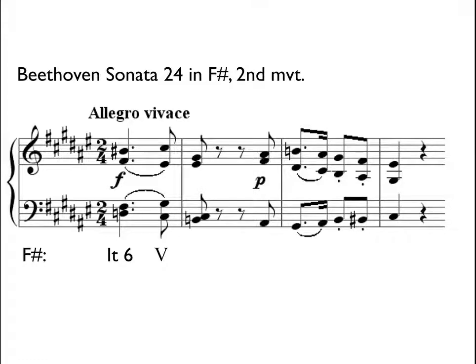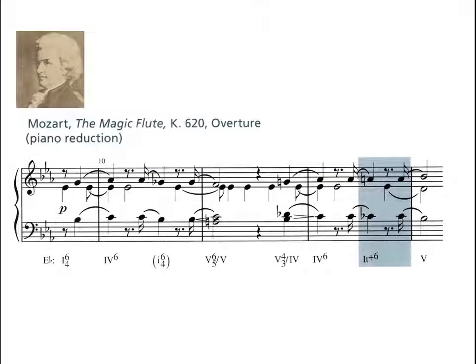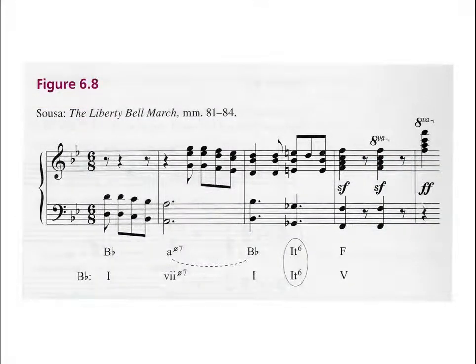Here are three examples of the Italian six chord. The first example of the Italian six is right at the opening of this Beethoven movement. In the next example, you should be able to clearly hear the chromatic ascending treble line with the chromatic descending bass line, which form the characteristic augmented sixth chord. Sousa also uses an Italian six in the break strain.